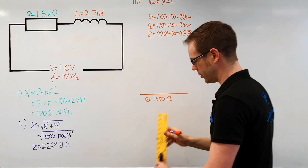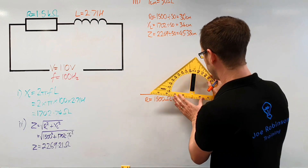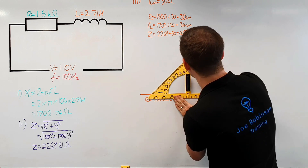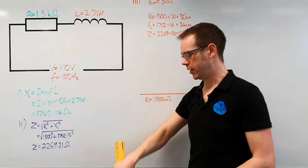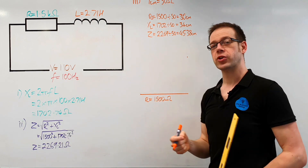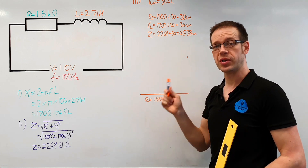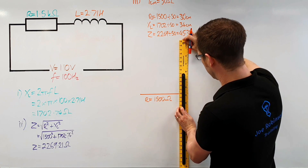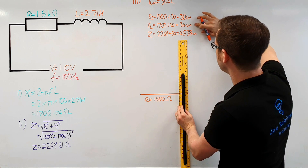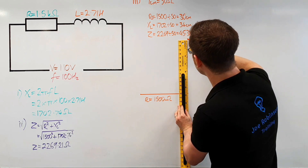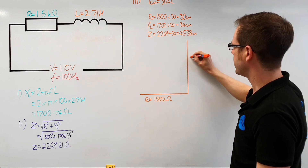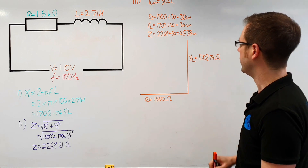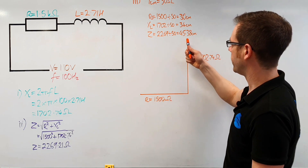Now I'm going to draw the inductive reactance line, which is always vertical. Because it's inductive, I'm going to draw it pointing upwards. For other explanations on where that comes from, please check out previous videos on Gerald Rinson Training. So the right angle goes on the right, and we draw the line vertically — 34 centimeters long, straight up. That line represents our inductive reactance, XL equal to 1,702.74 ohms.